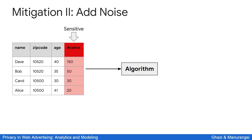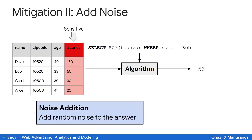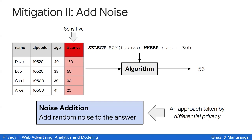Another mitigation is to add noise: instead of outputting the exact value, you add some random noise to the answer. This is exactly the approach taken by differential privacy, and we will see how this ensures formal privacy guarantees.